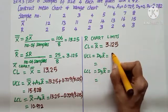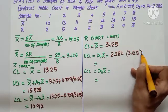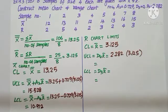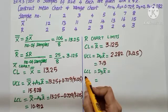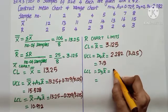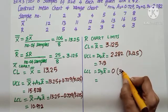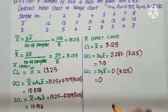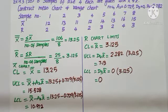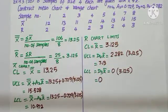To find the control limits for the range chart: CL equals r-bar, that is 3.125. UCL equals D4 into r-bar: 2.282 into 3.125, which gives 7.13. LCL equals D3 into r-bar: 0 into 3.125, which equals 0. The question asks us to construct the mean chart and range chart, so we need to draw and check whether the process is in control.